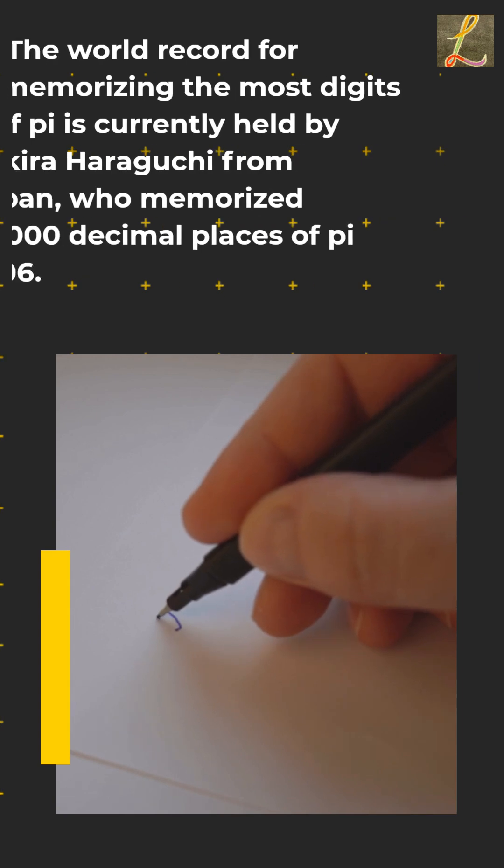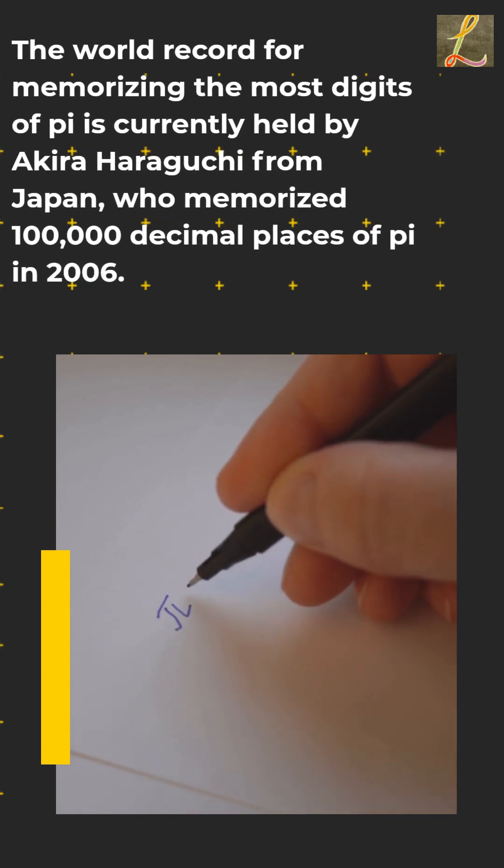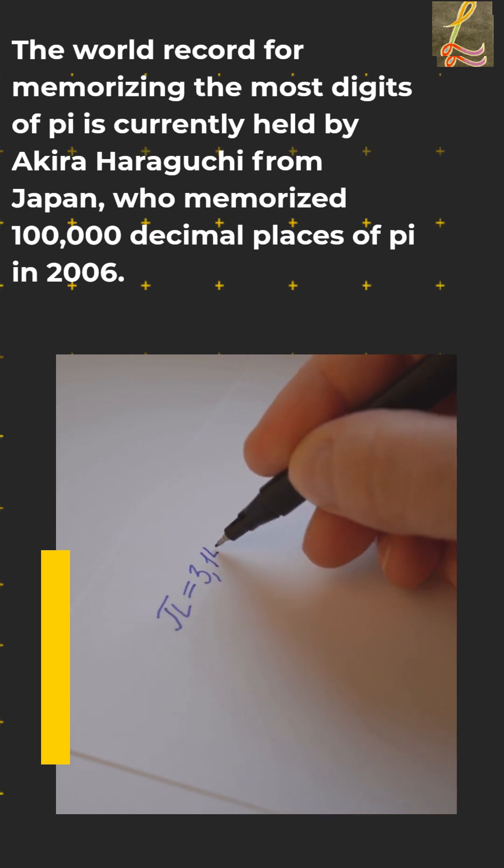The world record for memorizing the most digits of Pi is currently held by Akira Hauchi from Japan, who memorized 1 lakh decimal places of Pi in 2006.